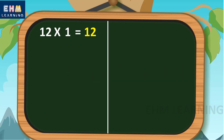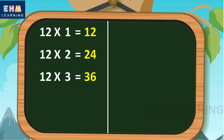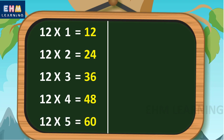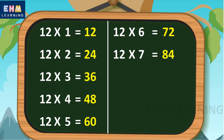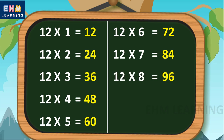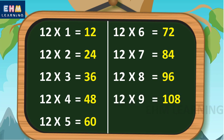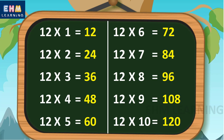Let's learn again. Twelve ones are twelve, twelve twos are twenty-four, twelve threes are thirty-six, twelve fours are forty-eight, twelve fives are sixty, twelve sixes are seventy-two, twelve sevens are eighty-four, twelve eights are ninety-six, twelve nines are one hundred and eight, twelve tens are one hundred and twenty.